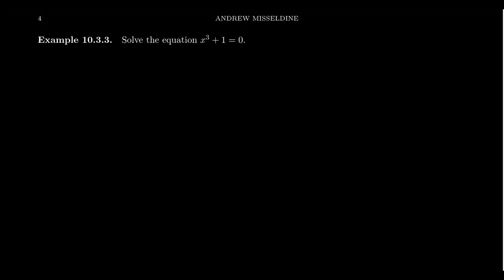In this video, I want to solve the polynomial equation x³ + 1 = 0. I want to solve this for all of its complex roots. Notice if I subtract 1 from both sides, I end up with x³ = -1. And therefore, solving this polynomial equation is equivalent to finding all of the complex cube roots of -1.